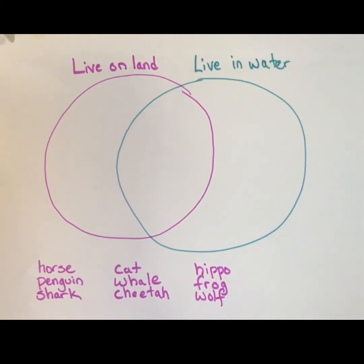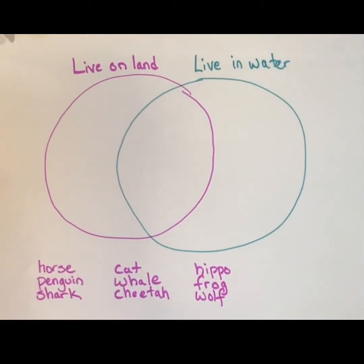Hello, fourth graders. Today we are going to talk about Venn diagrams, and I've got one right here. Venn diagrams are great ways to organize a list or a set of data into things that are the same and things that are different from each other. And so we're going to practice that.